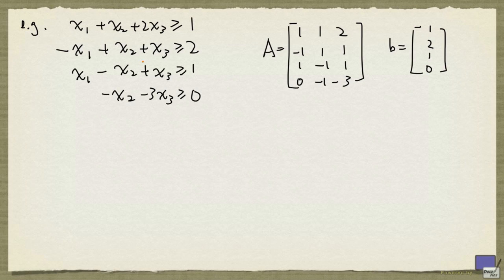So what we're going to do is we're going to use Fourier-Motzkin elimination, and from there we'll try to work out a certificate of infeasibility. So let's first label these inequalities 1, 2, 3, and 4. And say we want to eliminate x1 first.